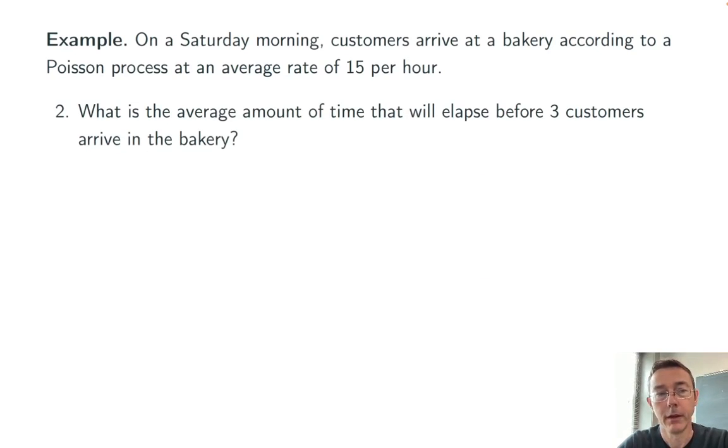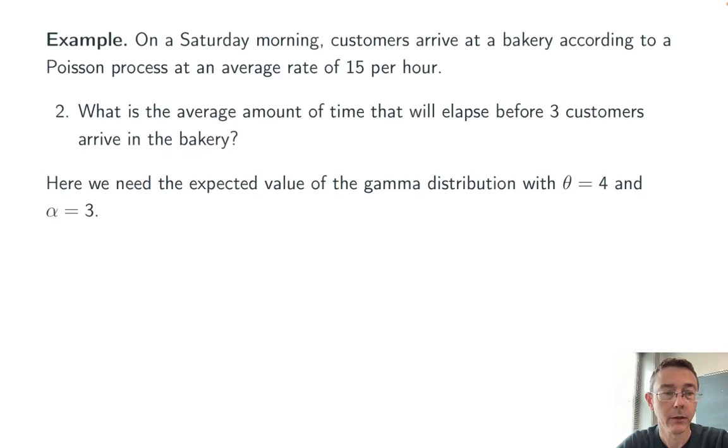So problem two, what's the average amount of time that will elapse before three customers arrive at the bakery? So here we're just trying to get the expected value of that same gamma distribution. So we're going to use that formula from a few slides ago. Mu is equal to theta times alpha, 4 times 3, about 12 minutes.